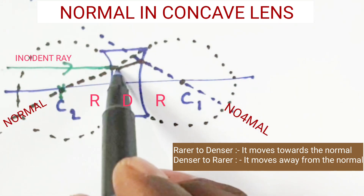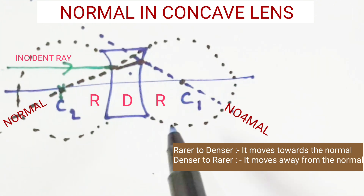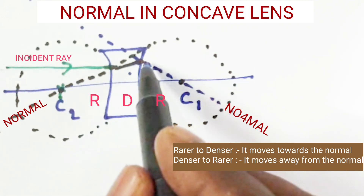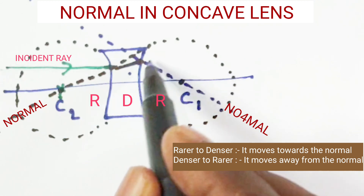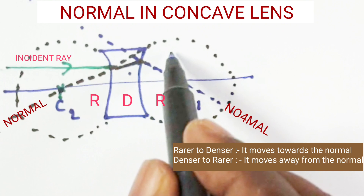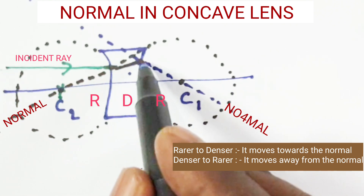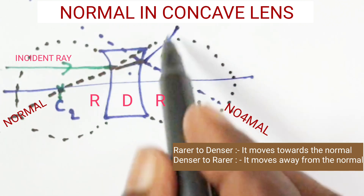Now the light ray is moving from denser to rarer medium. When a light ray travels from denser medium to rarer medium, it moves away from the normal. This is the normal. Generally the light ray would travel in a straight line, but because of the change in medium from denser to rarer, it moves away — it takes some more deviation.